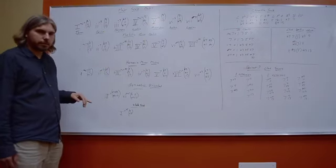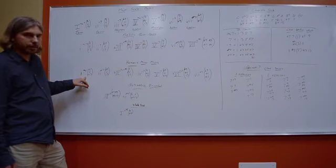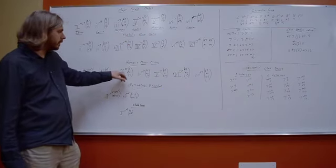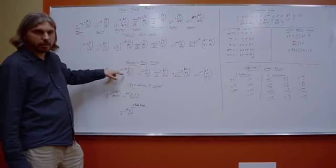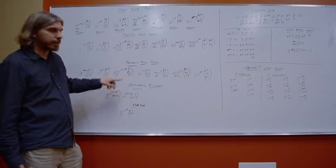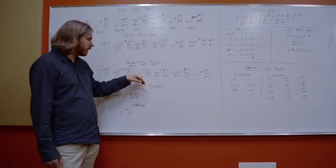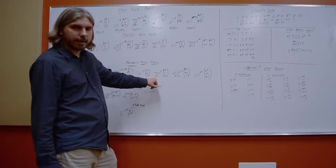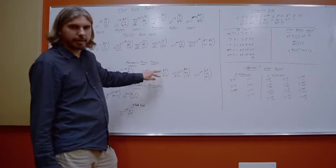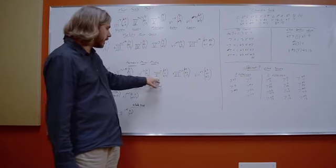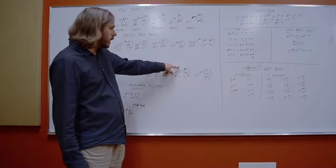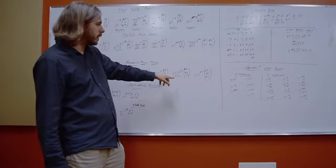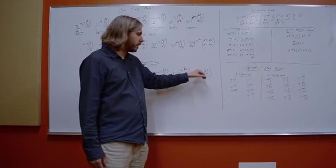Moving on to the harmonic minor modes: the 1 chord is a minor major 7 sound with 9, 11, and flat 13. The 2 chord is a half diminished with flat 9, 11, and flat 13. The 3 chord is a major 7 sharp 5 with natural 9, natural 11, and 13 — differentiated from melodic minor's version by having a natural 11 instead of sharp 11. The 4 chord is a minor 7 with natural 9, sharp 11, and 13 — a very unique sound. The 5 chord is a dominant 7 with flat 9, 11, and flat 13 — a very iconic sound used a lot. The 6 chord is a major 7 with sharp 9, sharp 11, and 13. And the 7 chord is a fully diminished 7 with flat 9, flat 11, and flat 13.